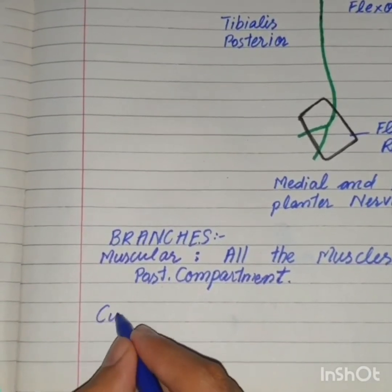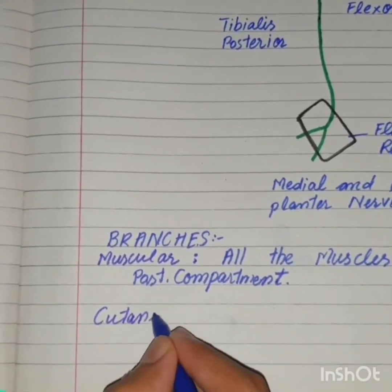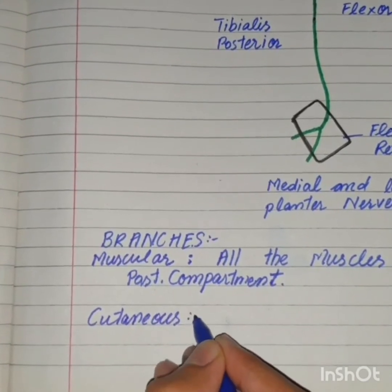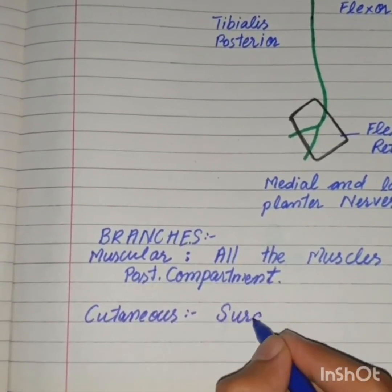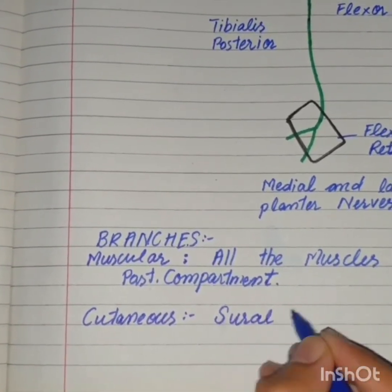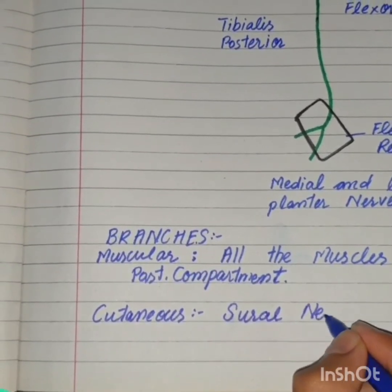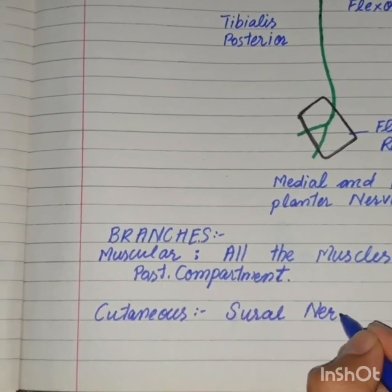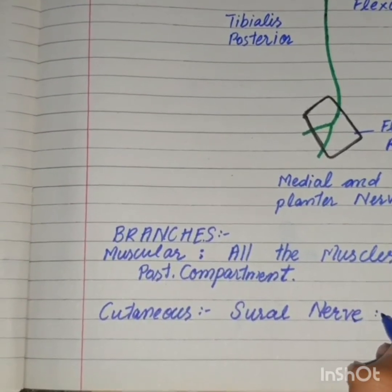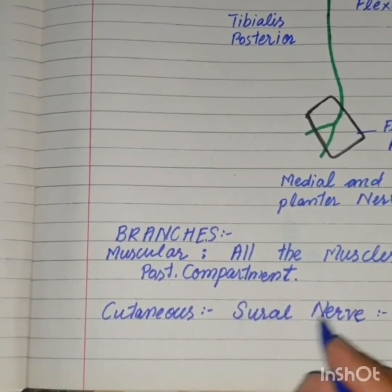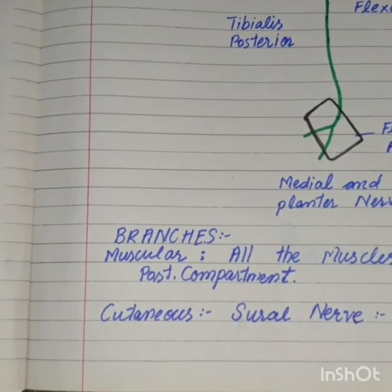The cutaneous branch is only one, that is the sural nerve. And the terminal branches are the medial and lateral plantar nerves.